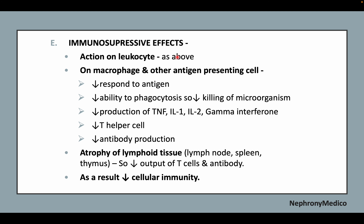Immunosuppressive effects: glucocorticoids act on macrophages and other antigen-presenting cells, reducing the response to antigens and the ability to phagocytose, thereby reducing killing of microorganisms. They reduce production of tumor necrosis factor, interleukin-1, interleukin-2, and gamma interferon. They reduce T-helper cells and antibody production. They cause atrophy of lymphoid tissue — lymph nodes, spleen, and thymus — resulting in reduced output of T cells and antibodies, and reduced cellular immunity.